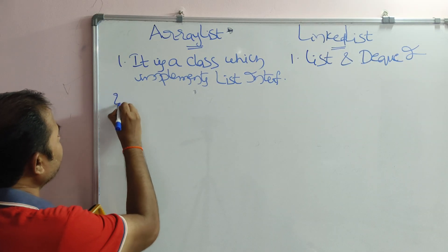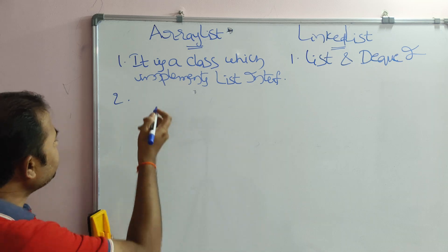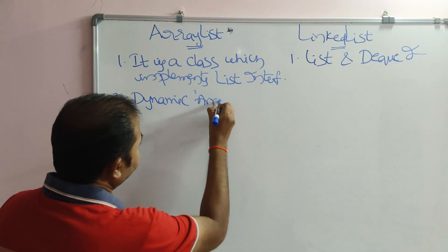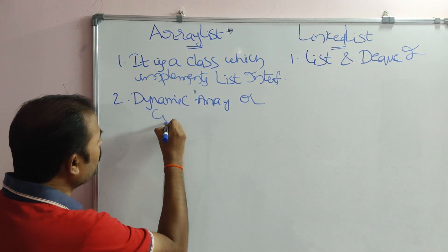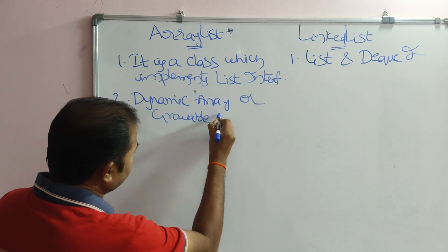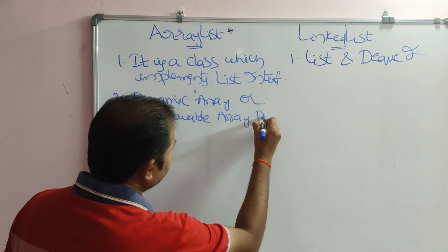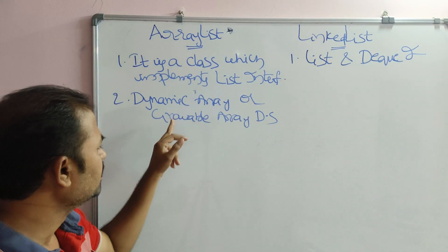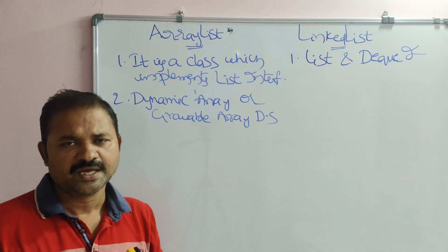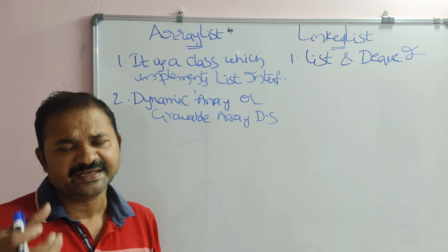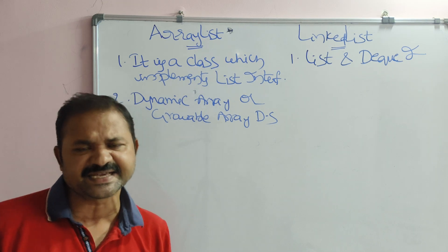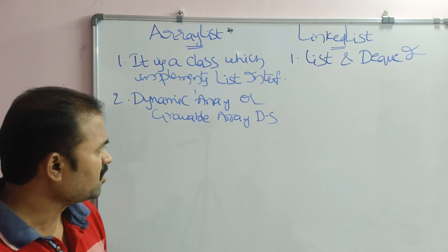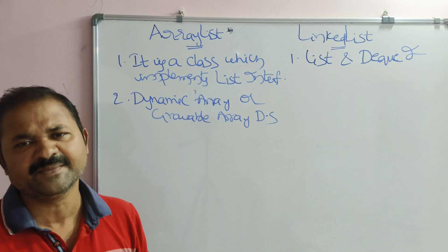ArrayList uses a dynamic array, also called a growable array, as its data structure. Dynamic means according to our requirement we can increase or decrease the size of the array — there is no restriction on the size, and we can store as many elements as we want.